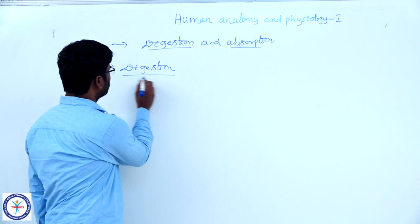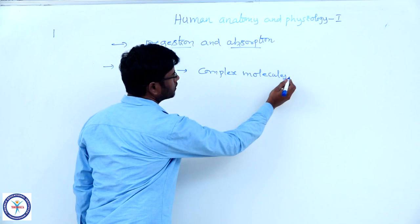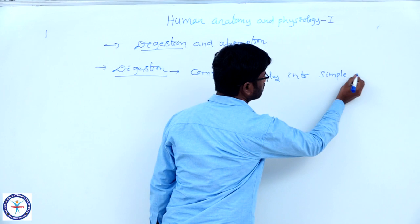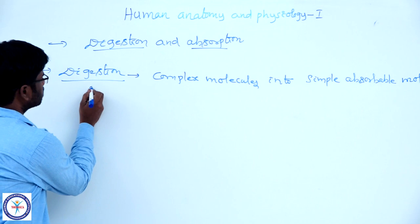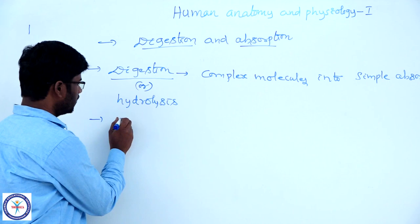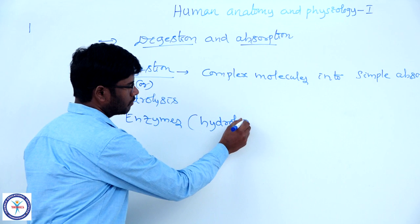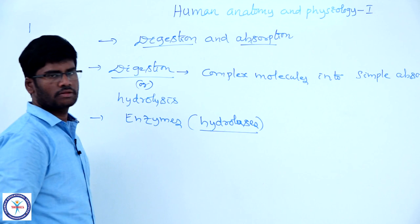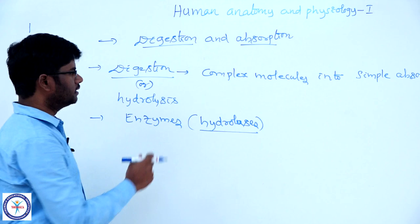Now I would like to define digestion. Digestion means the conversion of complex molecules into simple absorbable molecules. The process of digestion is also named as hydrolysis. The complex molecules of the diet are converted into simple molecules by the action of enzymes, which are called hydrolases. They play a role in hydrolysis, converting complex food items into simple absorbable molecules by adding one water molecule.